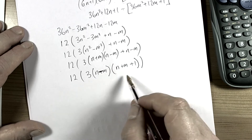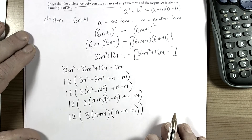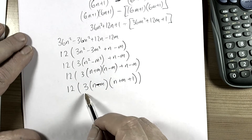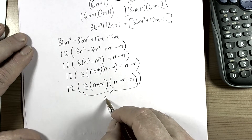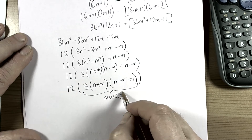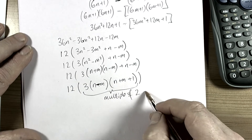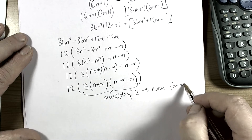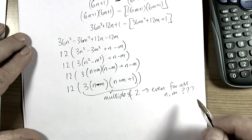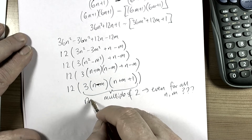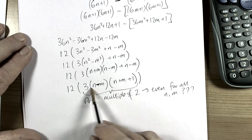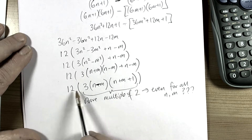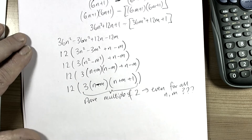We want to prove this is a multiple of 24, so we need to prove that the bracket (n − m)(3(n + m) + 1) is always a multiple of 2 — in other words, always even for all values of n and m. Because if we can prove that this is always even, then 12 times an even number will always be a multiple of 24.